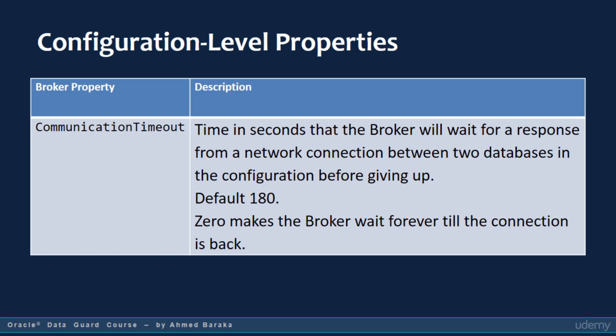If you have a poor network connection in terms of reliability or latency, you may consider increasing the value of this property. A value of zero indicates that a network communication should never be timed out. Practically, you should never set this property to zero.